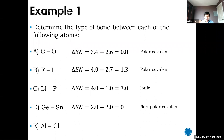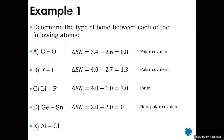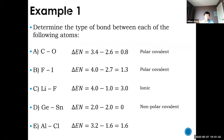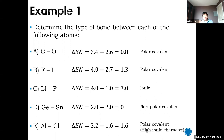Then there's aluminum and chlorine. The electronegativity difference: chlorine is 3.2, aluminum is 1.6, so the difference is 1.6. By definition, 1.6 is less than 1.7, so it is a polar covalent bond.